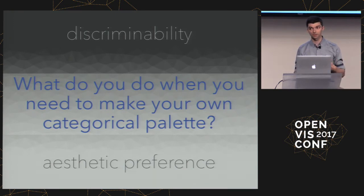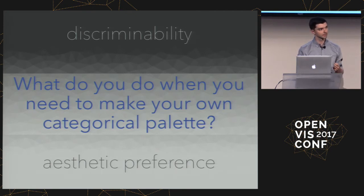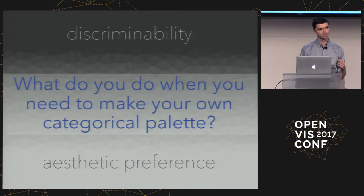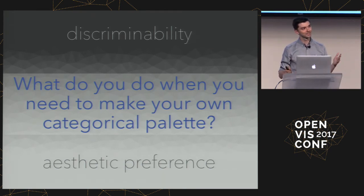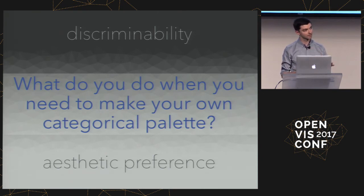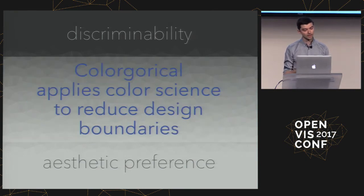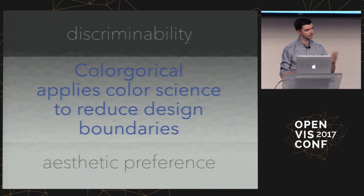The way Colorgorical approaches categorical color palette design is by trying to define a balance between discriminability and aesthetic preference. That's great on the surface, but it requires a really deep knowledge of color science, which a lot of people don't have. What Colorgorical does is try to bridge the divide between theory and practice by applying color science to reduce design boundaries.